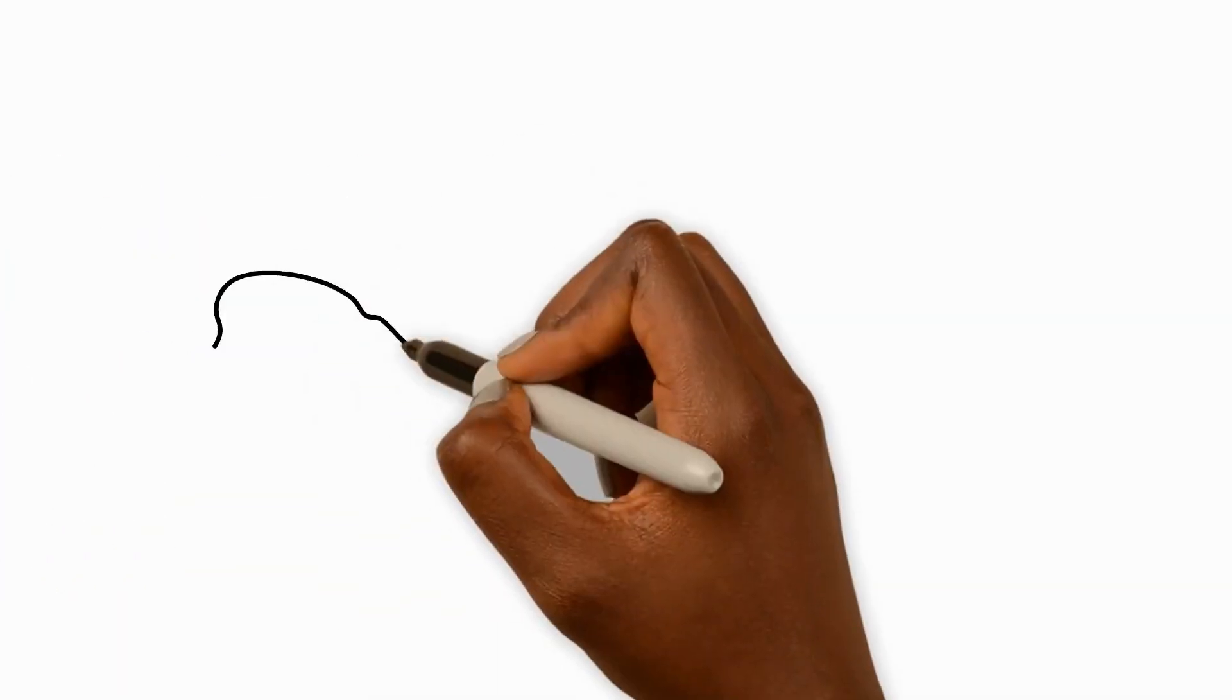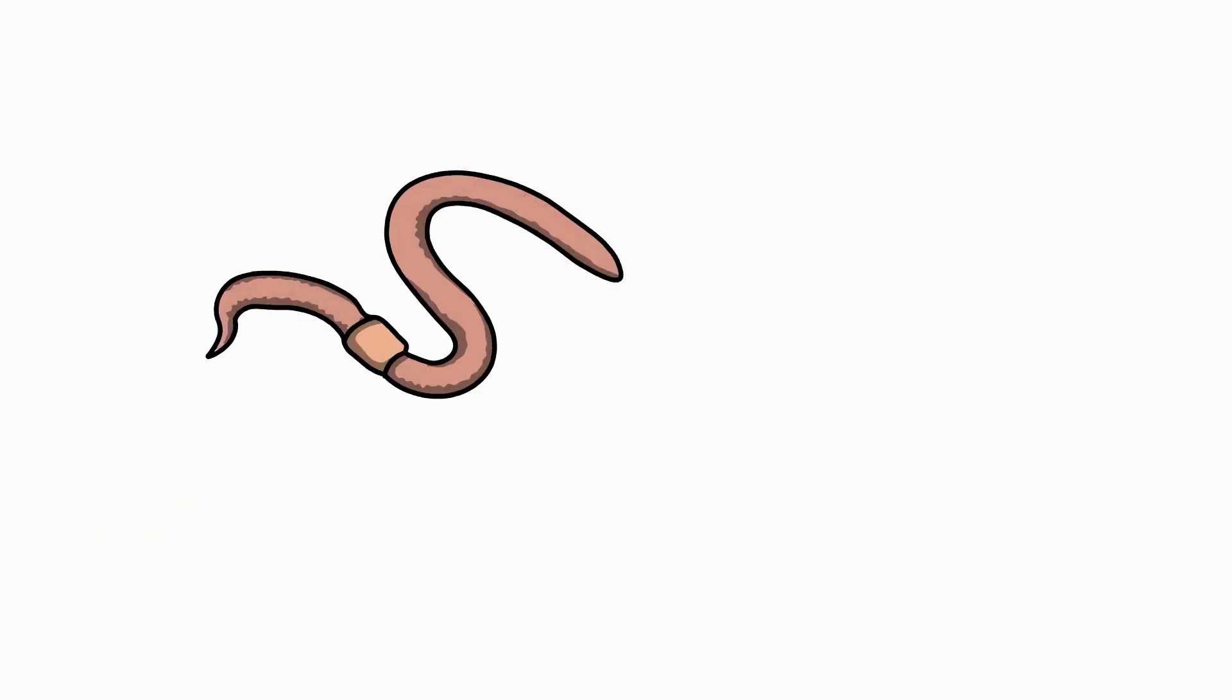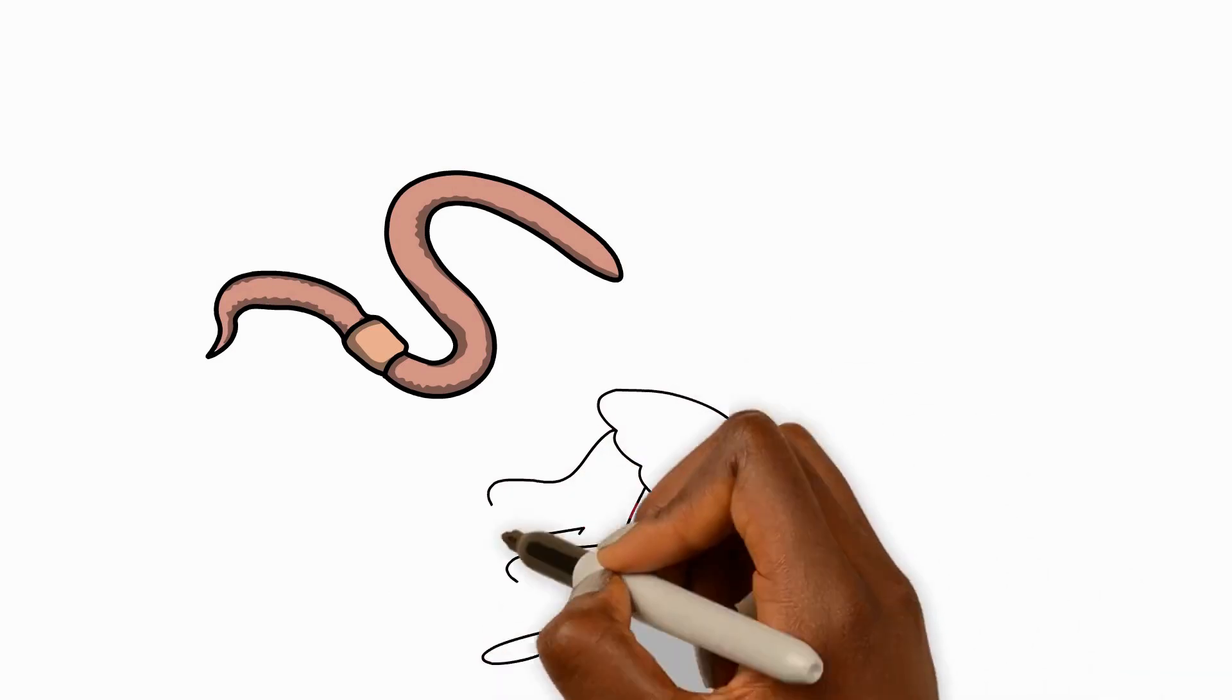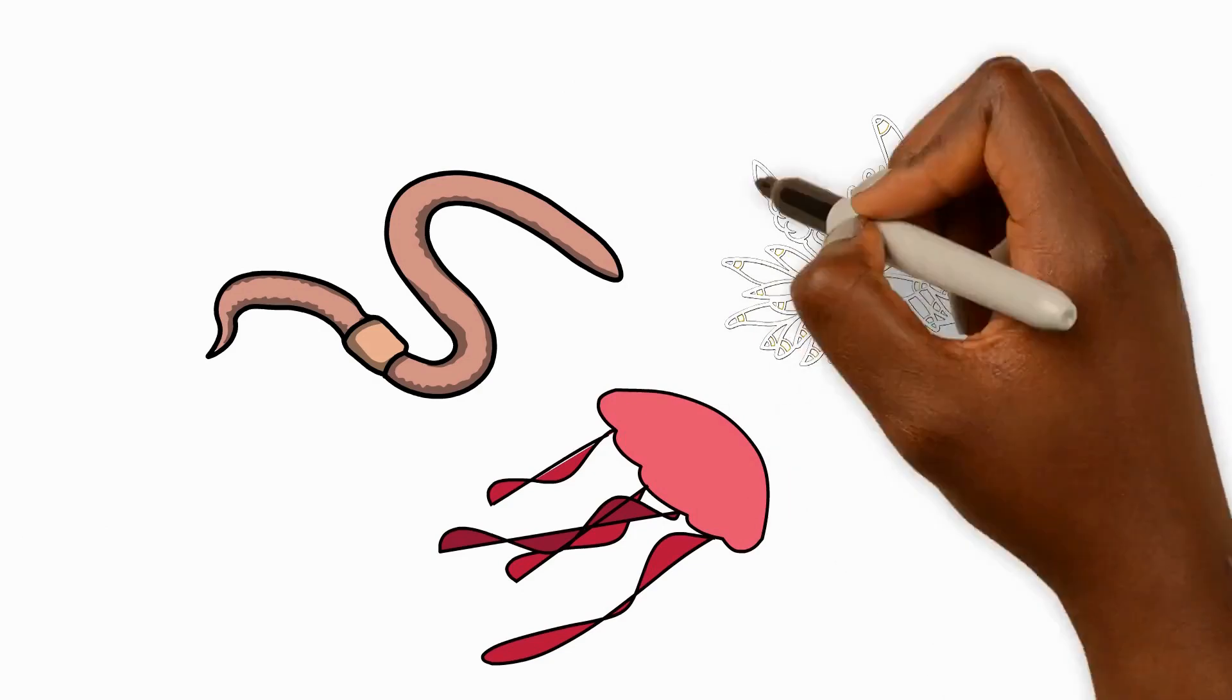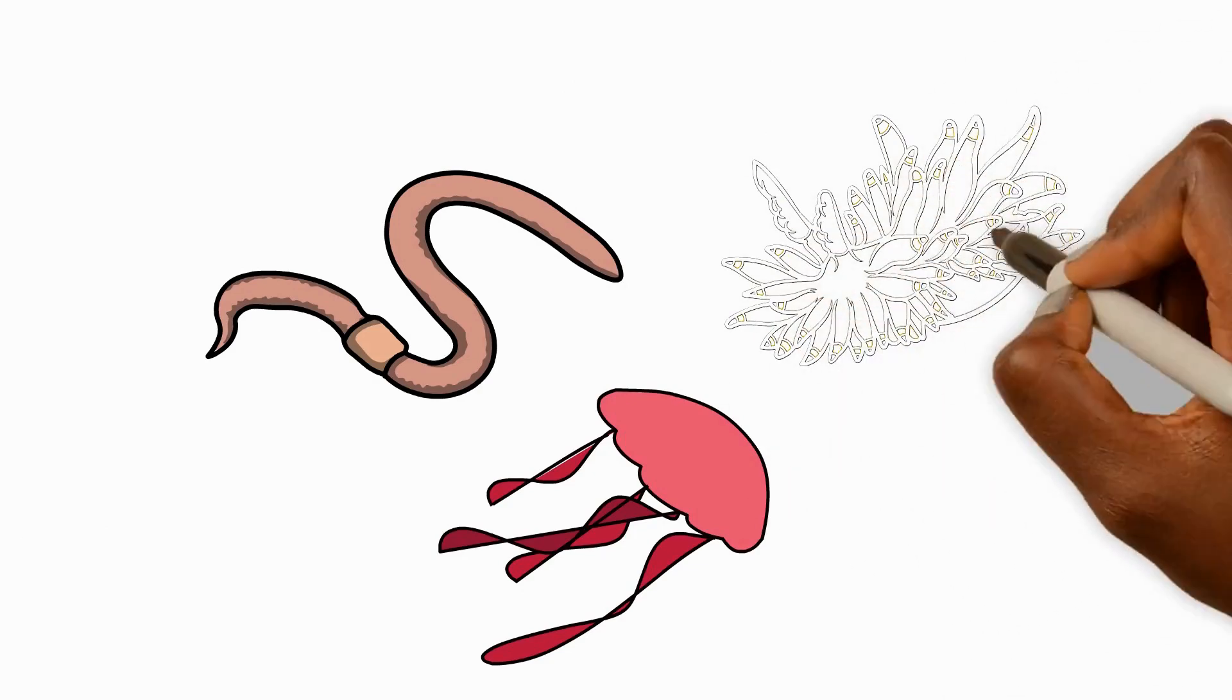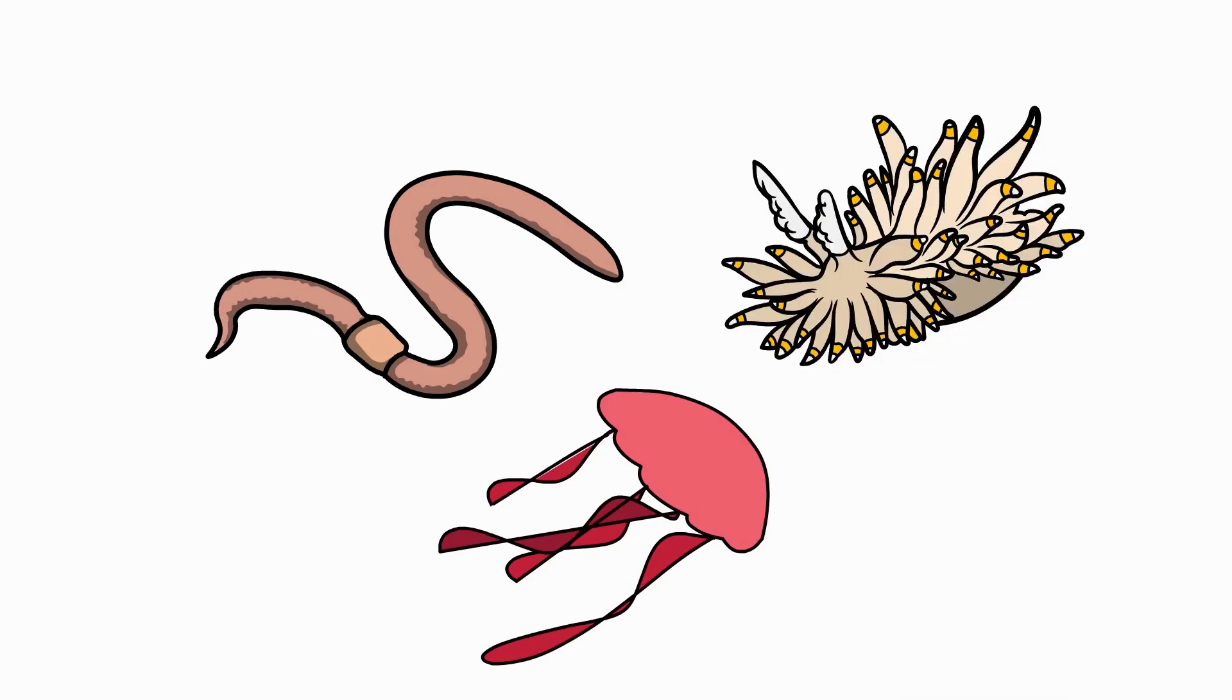Finally, other animals have no skeleton inside or outside their body, like worms, jellyfish, and sea slugs. These animals usually move by using their muscles to push against something outside their body, like soil for worms and water for jellyfish and sea slugs.